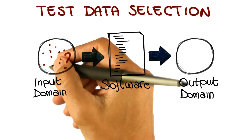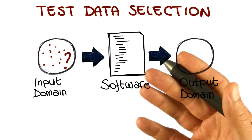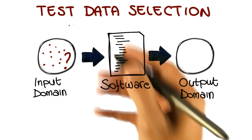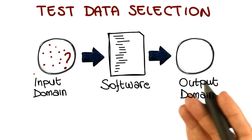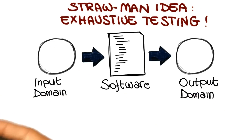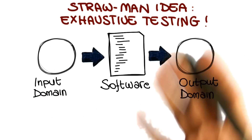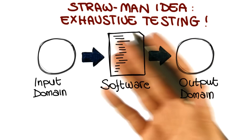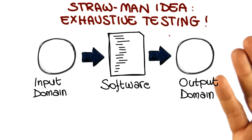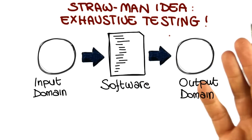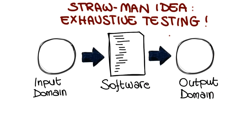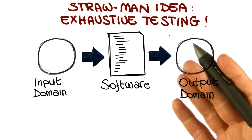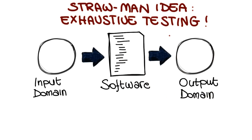So how can we select interesting inputs for our software — a set of inputs that, after we run them on the software, if the software behaves correctly, will give us enough confidence that the software is correctly implemented? One possible idea is: why don't we just test them all? We just do exhaustive testing — all the inputs. Nowadays we have powerful machines and a lot of computational power in the cloud. Why not just do it? To answer that question, I'm going to use a quiz.